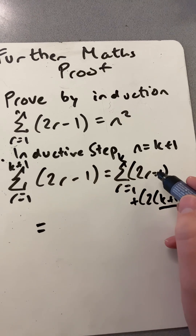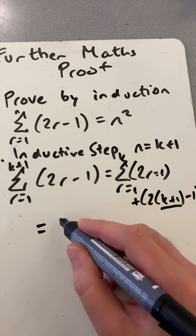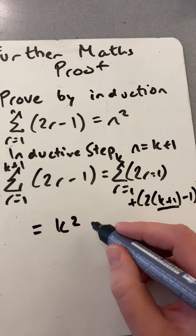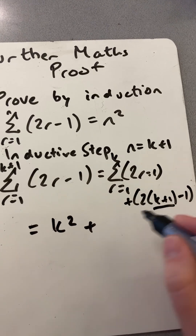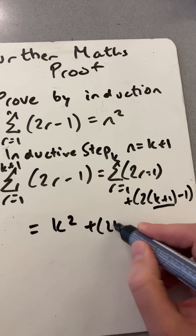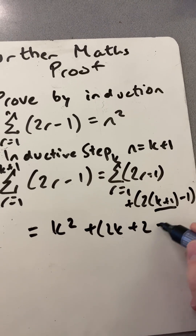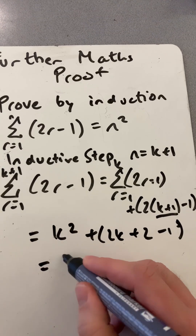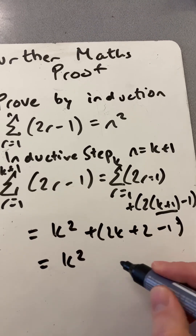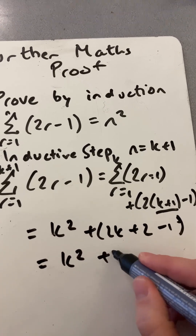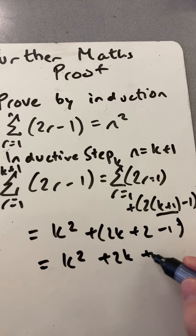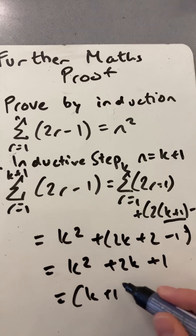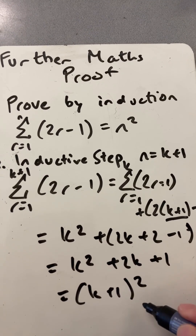But we know from Step 2 that that sum is k squared, as we assumed earlier. Plus, if we expand the extra term, that's 2k plus 2 minus 1. Then we can use some algebra: k squared plus 2k plus 1, and that is k plus 1 all squared.